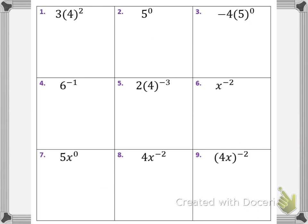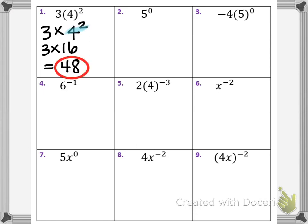Let's look at some practice problems. In number 1 we have a positive integer exponent: 3 times 4 to the second power. Following order of operations, only the base 4 is being raised to the second power, not the 3. So we do exponents before multiplication: 4 squared is 16, and 3 times 16 gives a final answer of 48.